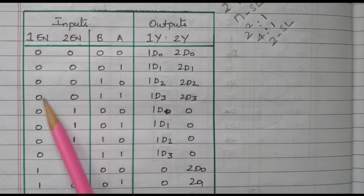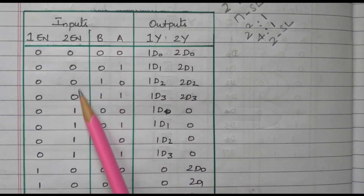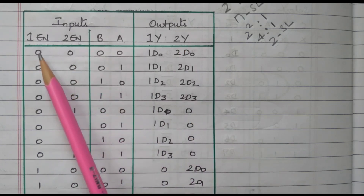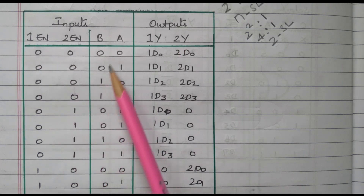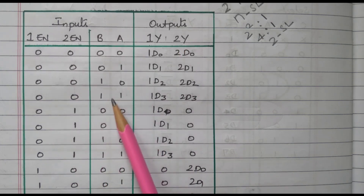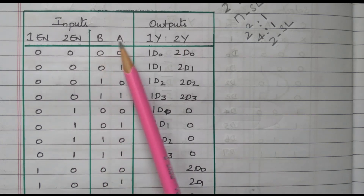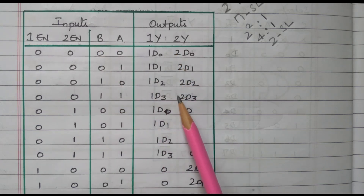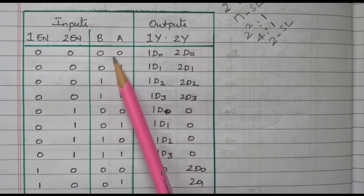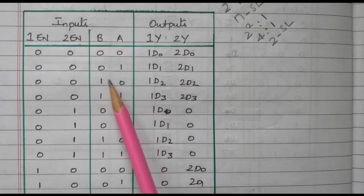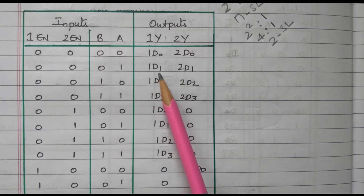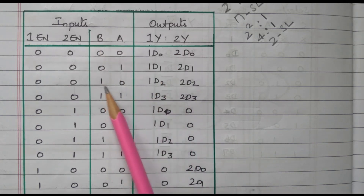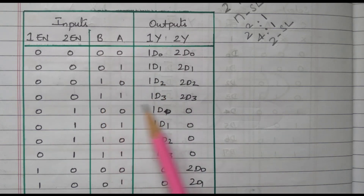Both multiplexers are activated by making both enables 0. There are four combinations: 00 selects D0, 01 selects D1, 10 selects D2, and 11 selects D3 — for both the first and second set of outputs simultaneously.